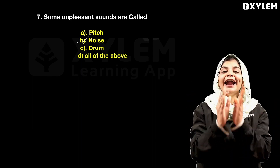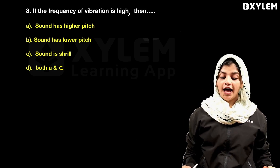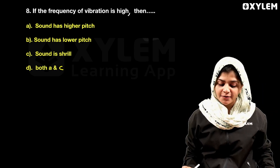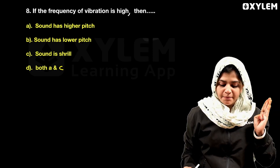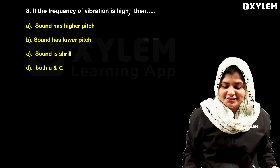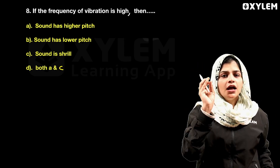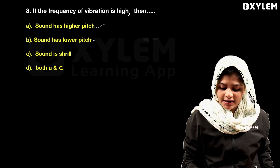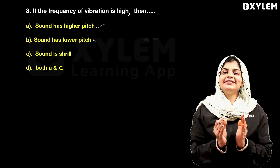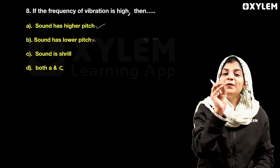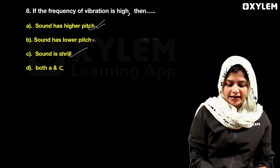Next question, the 8th question: if the frequency of vibration is high, then — we have four options: sound has high pitch, sound has lower pitch, sound has shrink, and both A and C. The answer is: sound has high pitch.